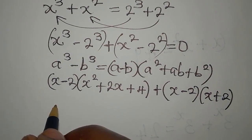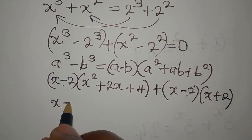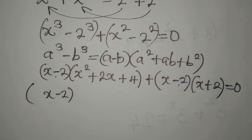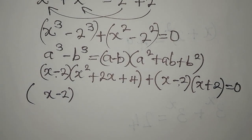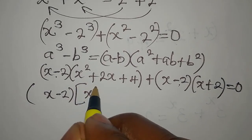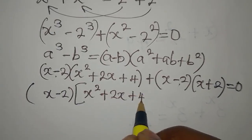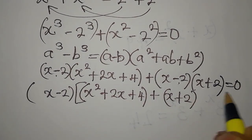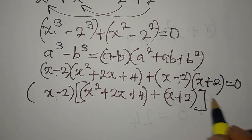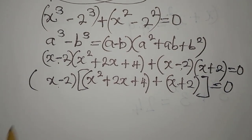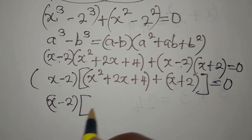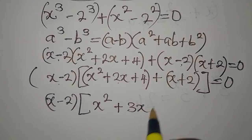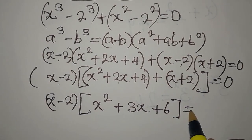We now have (x - 2)(x² + 2x + 4) + (x - 2)(x + 2) = 0. Since (x - 2) is a common factor, we factor it out. This gives (x - 2)[(x² + 2x + 4) + (x + 2)] = 0. Combining inside the brackets: x² + 2x + x = 3x, and 4 + 2 = 6, so we get (x - 2)(x² + 3x + 6) = 0.